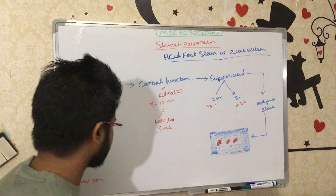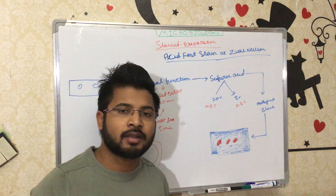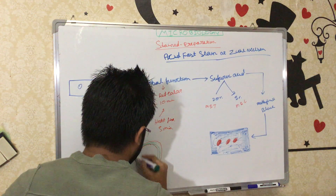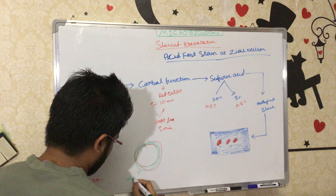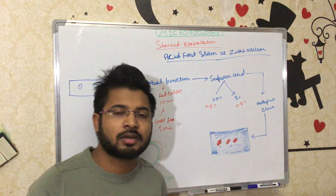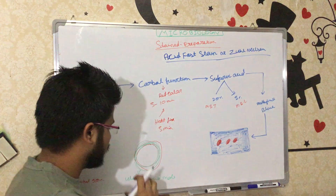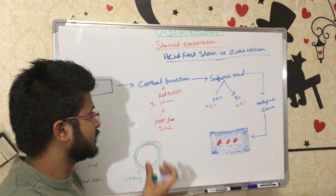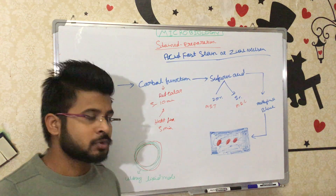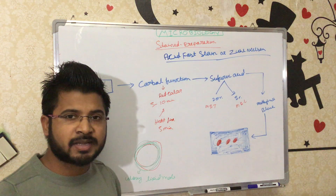Mycobacterium tuberculosis has a very thick waxy lipid bilayer surrounding it — shown here as the green area. Carbol fuchsin loves to bind to lipid molecules, so it will very tightly bind to this lipid layer. That is why the mycobacterium looks red — because the carbol fuchsin is already red and accumulates tightly around the bacteria.